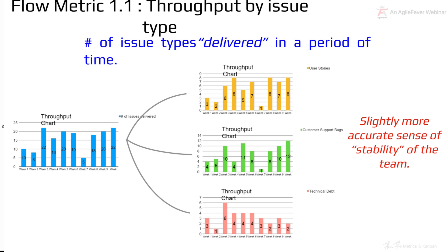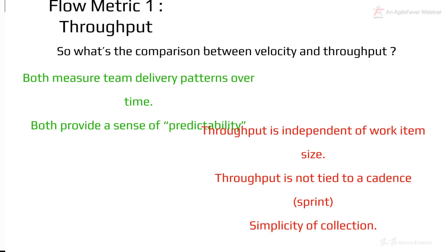Breaking throughput by issue type is much better because now you have a sense of team stability: this team delivers around 7 to 8 stories per week, approximately 10 customer support bugs per week, and about 3 to 4 technical debt stories per week. That is a very good starting point. Now, how different is throughput from velocity? Both measure team delivery patterns and give a sense of stability and predictability. But throughput is independent of work item size, not tied to a cadence — not done every sprint or PI — and it's very simple to collect. You're just measuring how many work items are done.